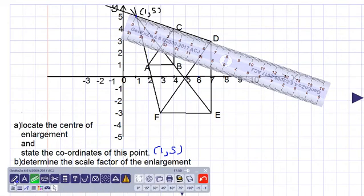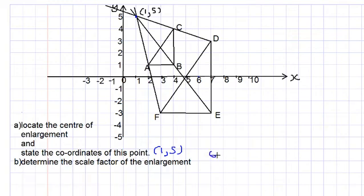So we have 6.4 divided by 3.2, and this works out to approximately 2. So the scale factor of the enlargement would be 2.